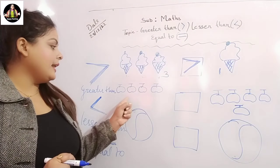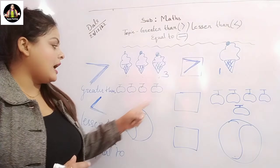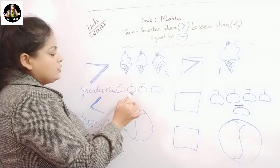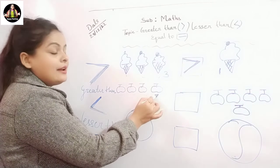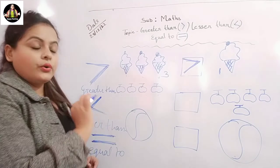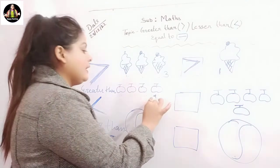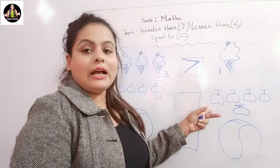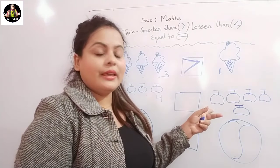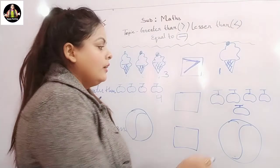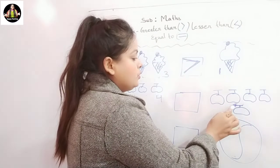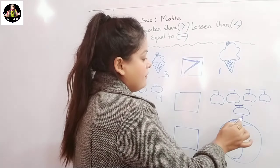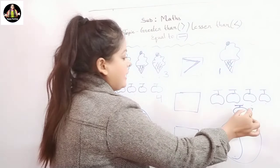How many apples are here? Let's count together. One, two, three, four — and four. How many? Four. And here, let's count with me: one, two, three, four and five. Five!